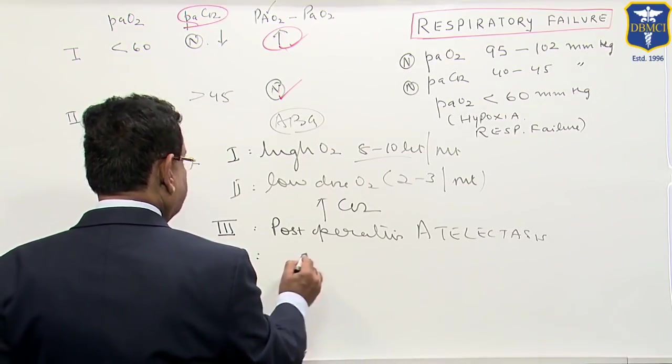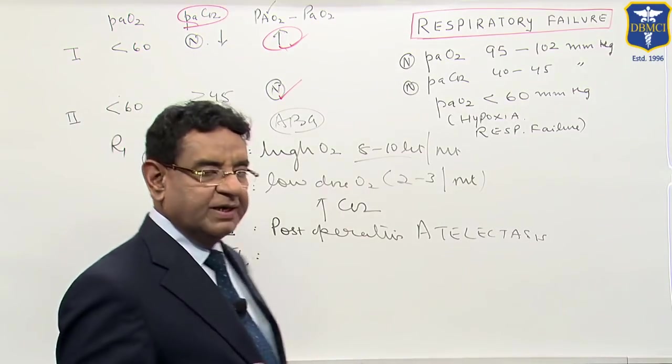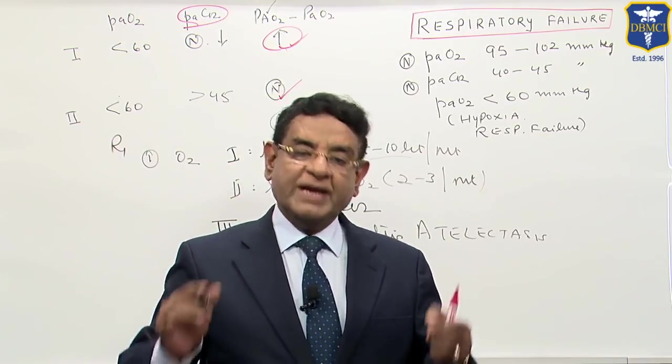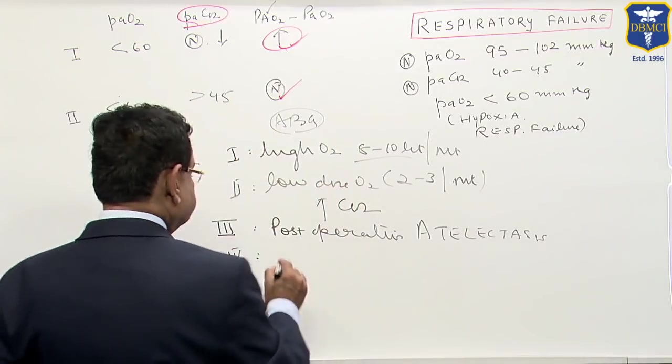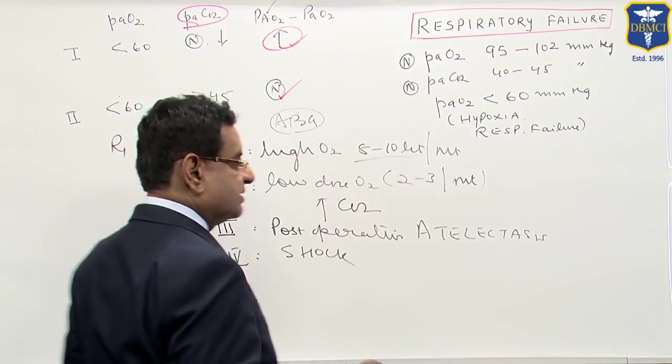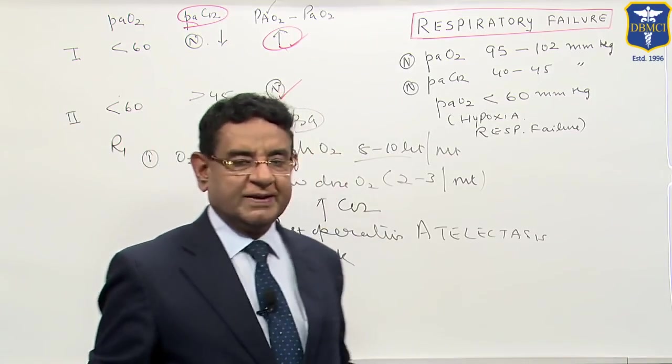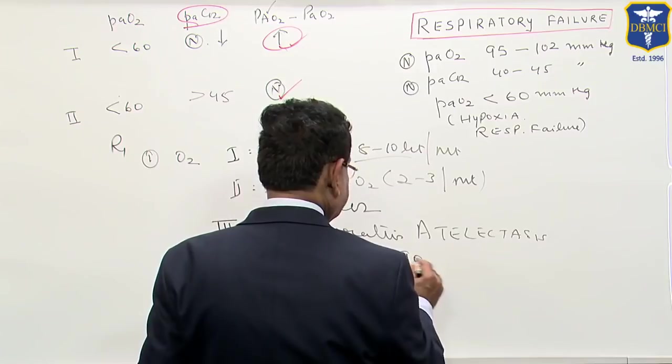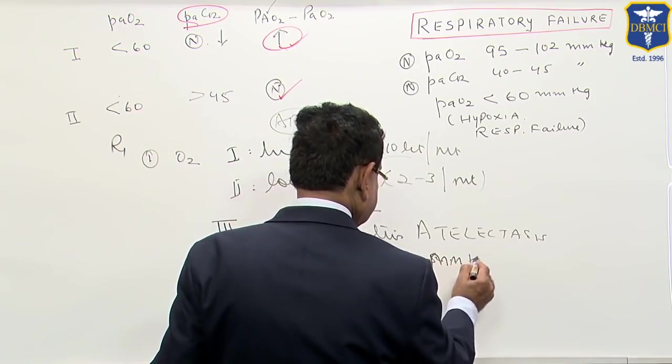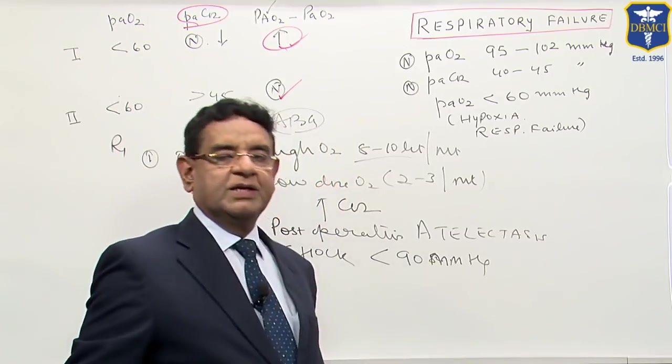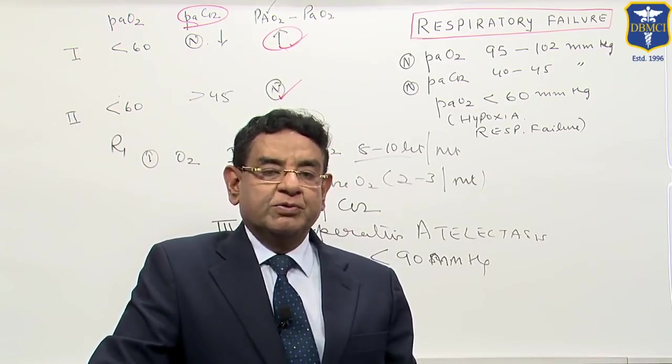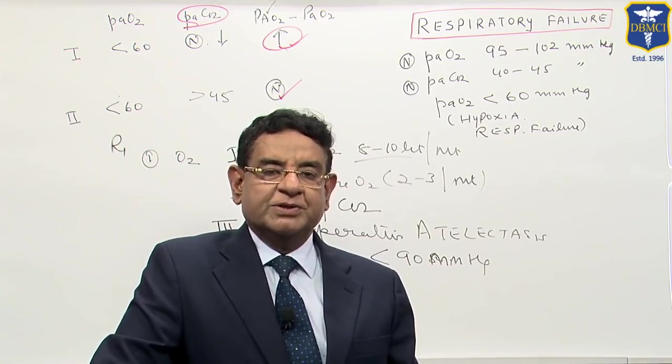Then we have type 4 respiratory failure. We call type 4 respiratory failure because of any condition, patient goes into shock. That means his systolic BP is below 90 millimeter of mercury. So as the patient has gone into shock, there will be reduced perfusion in the lung tissues.